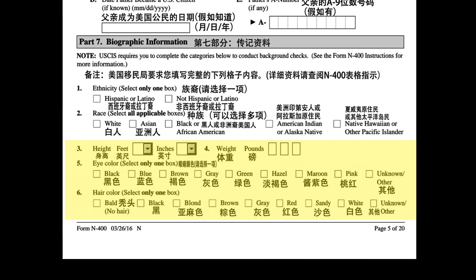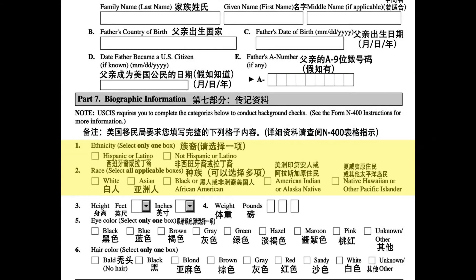6. Hair color: select only one box. Bald, no hair. Black. Blonde. Brown. Gray. Red. Sandy. White. Unknown. Other.